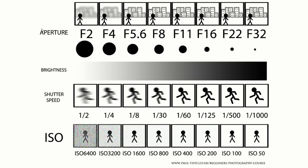Now if we have a look at the aperture section, we can see here we've got f2 — this is a wide open aperture and the background is going to be out of focus. If we start moving up the f-stops until we get to f32, we're going to have a really small aperture and the depth of field is going to be much wider, so the background is more likely to be in focus. A useful thing to remember with aperture is: as the f-number goes up, the depth of field goes up.